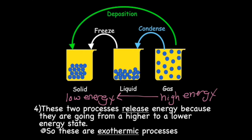Going from a gas to a liquid, liquids have less energy than gas. So in this case, we're releasing energy because we're going from a higher to a lower energy state. So we call these processes exothermic.